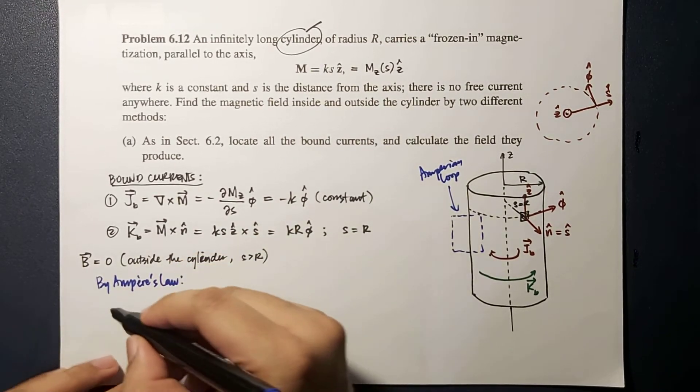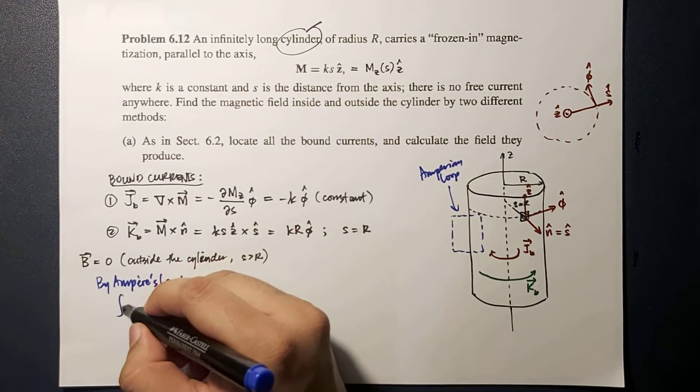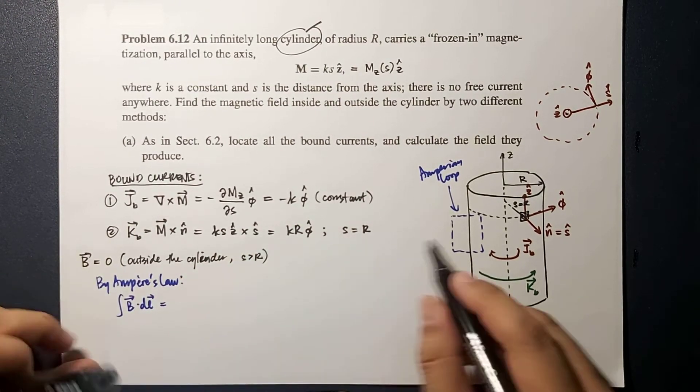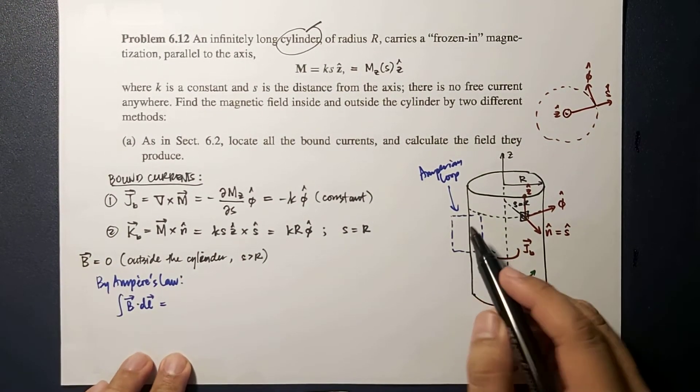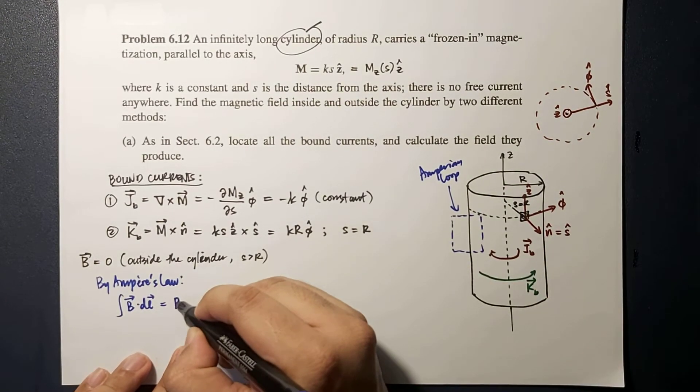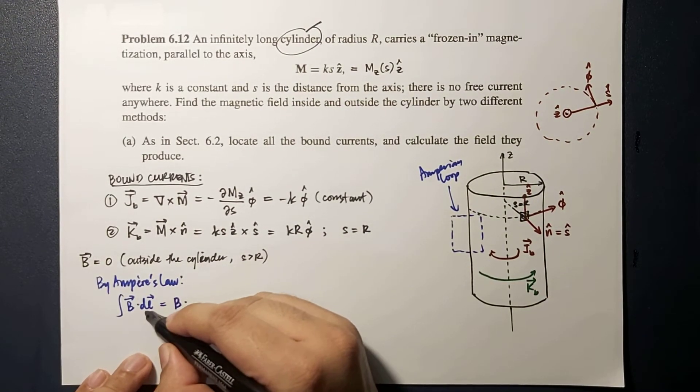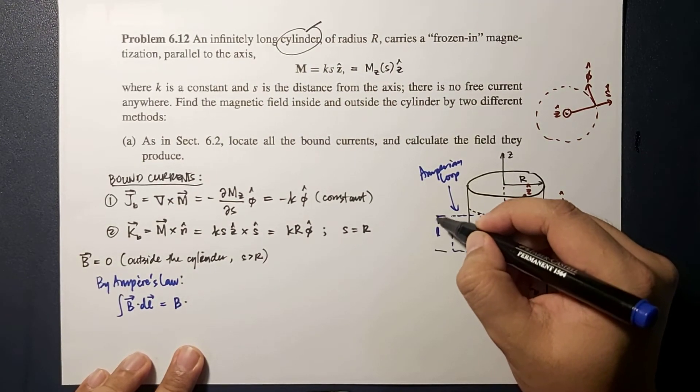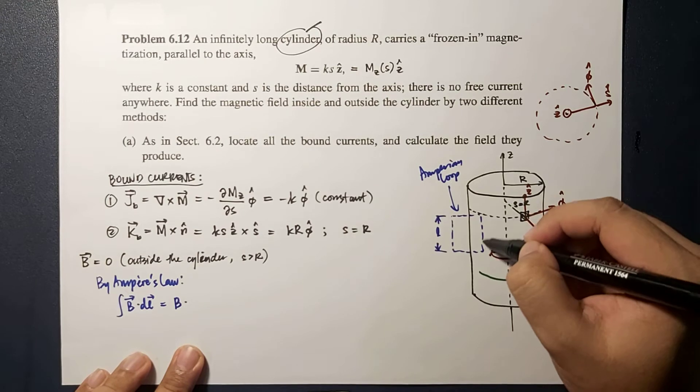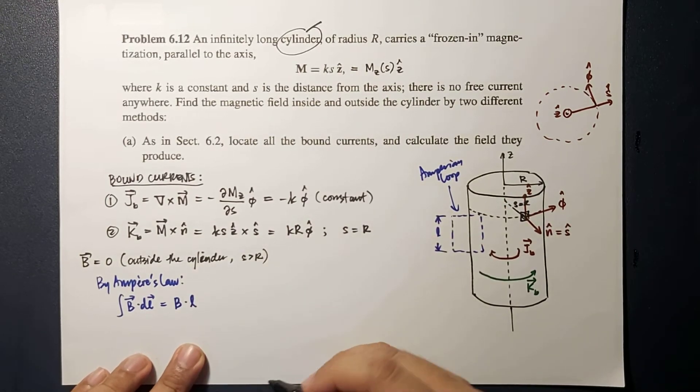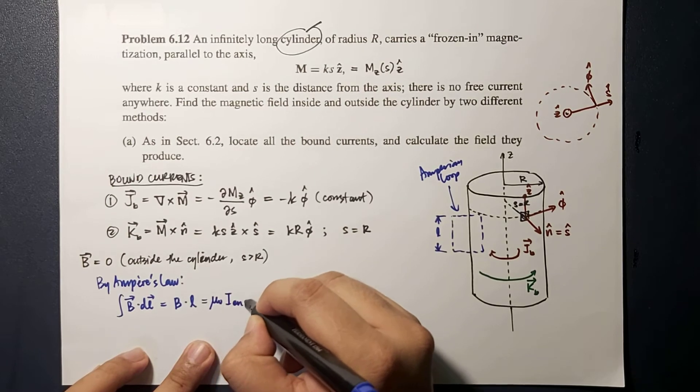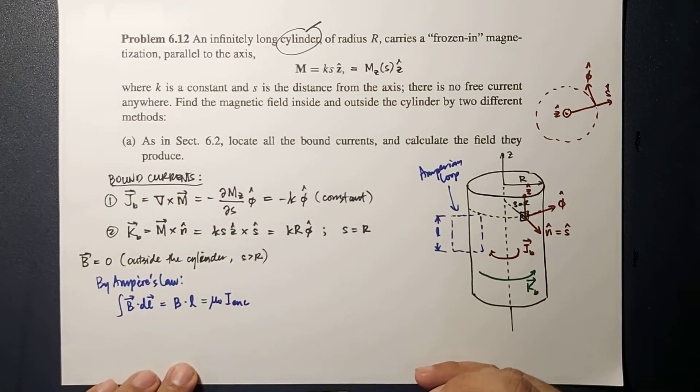So by Ampere's law, the integral of B dot dL here will only be along this direction. So this is equal to B times integral of dL, which is only this, which is L. This is equal to μ₀ I enclosed.